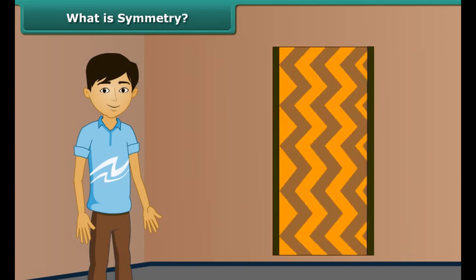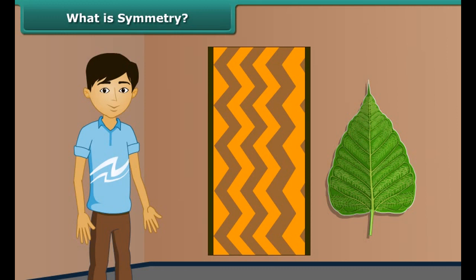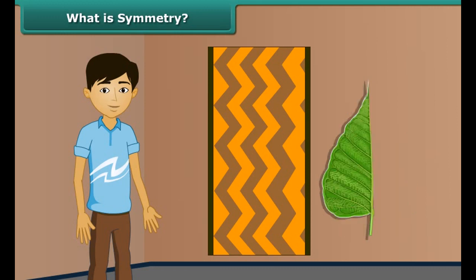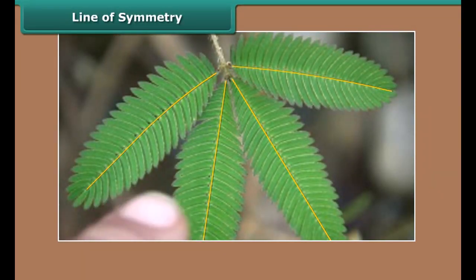Children, look at the rug. When you fold it, the left and right halves match each other. Thus, the rug is said to be symmetrical. Look at this leaf. On folding the leaf, its two halves match each other, thus it is symmetrical.